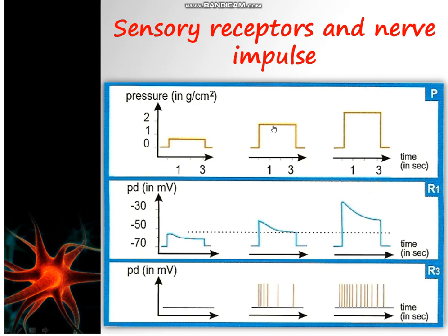However, when we apply a pressure of 2 grams per centimeter square, the receptor potential increases and exceeds the threshold of depolarization of the receptor. In this case, the corpuscle is able to generate action potentials — 6 APs in this case.